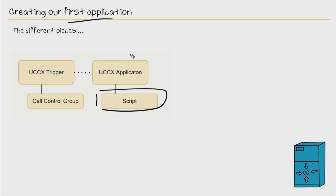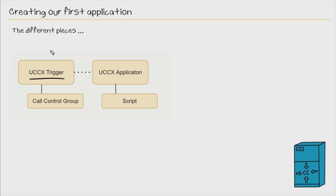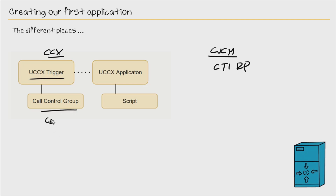In this nugget, we'll create this application and give a little overview of the components needed in order to create the application so it can be called. For example, we have to specify a Contact Center Express trigger — as CCX calls it — or if you're dealing with CUCM, they call it a CTI route point. When we configure that trigger, we have to specify a call control group, and that call control group has a group of CTI ports.